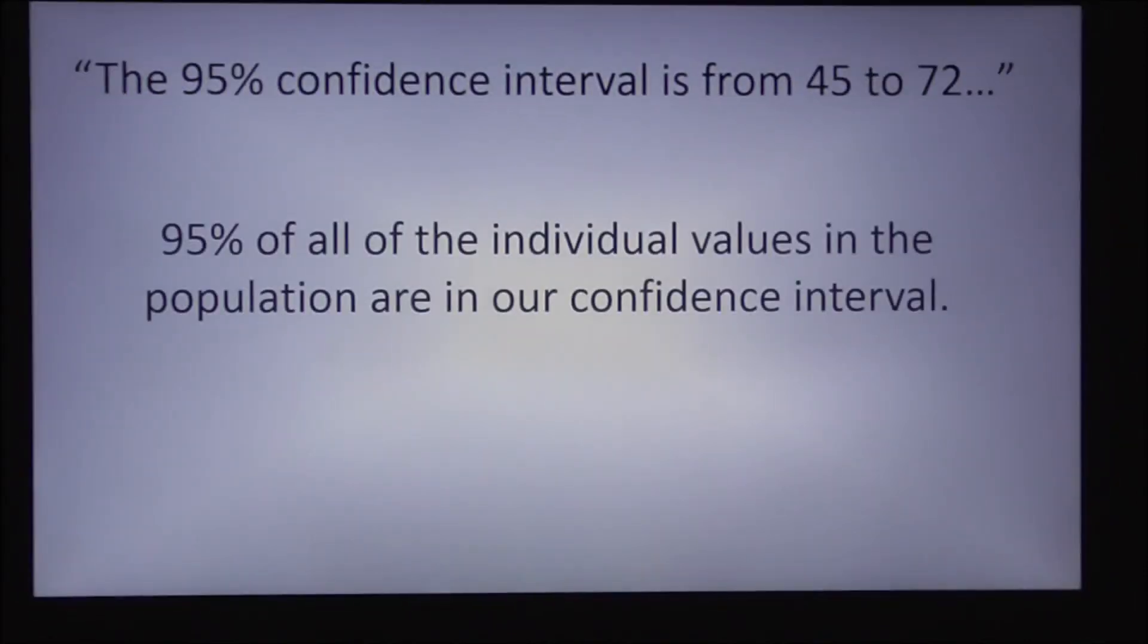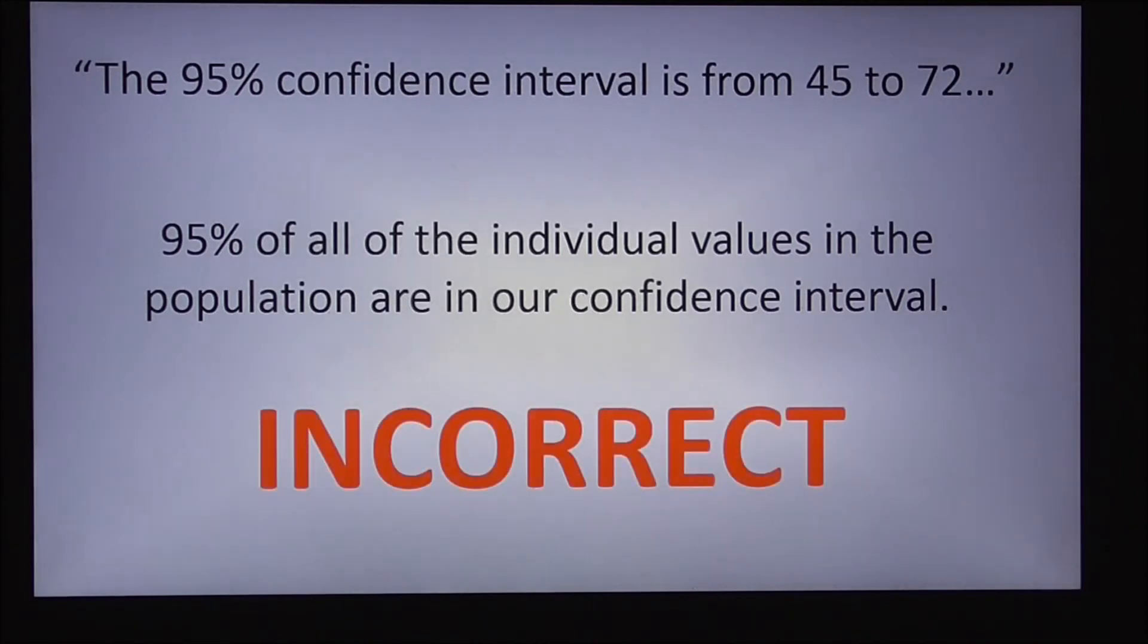Next example. 95% of all individual values in the population are in our confidence interval. Well, this may be pretty close to being true, but it's not 100% accurate because the confidence interval is actually a confidence interval on the mean and not necessarily a confidence interval on the individual values. So to say that this is a 95% confidence interval on individual values would be false. That is incorrect.